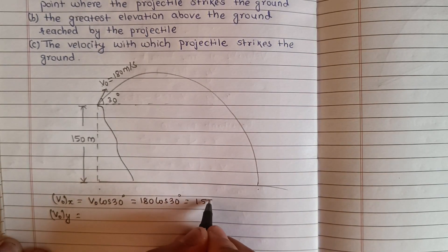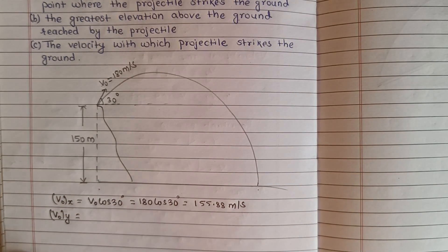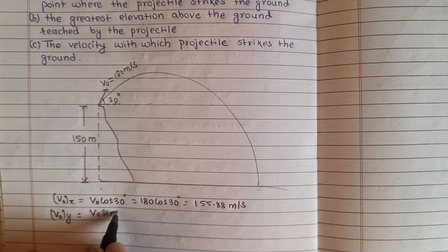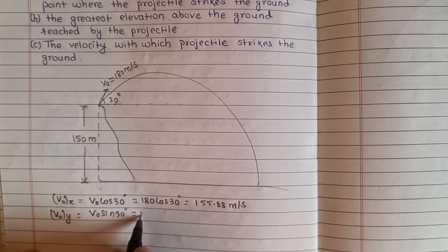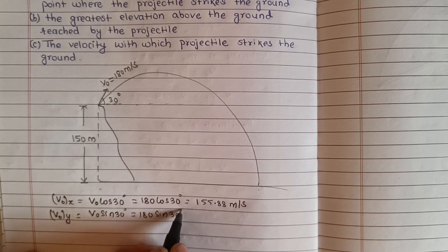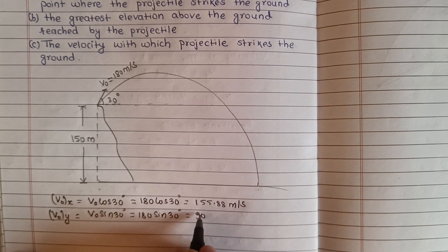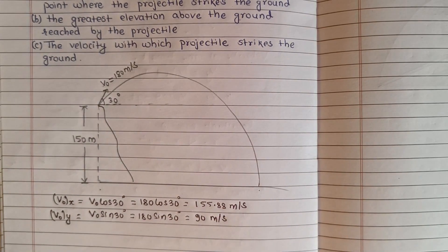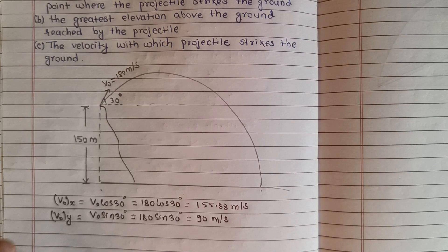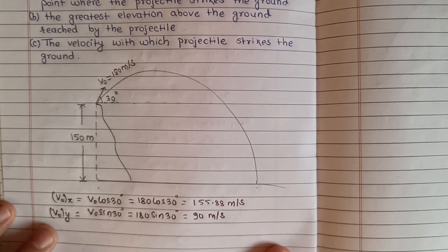For the horizontal direction, the initial velocity component v₀x equals 180 cos 30 degrees = 155.88 meter per second. For the vertical direction, v₀y equals 180 sin 30 degrees = 90 meter per second.